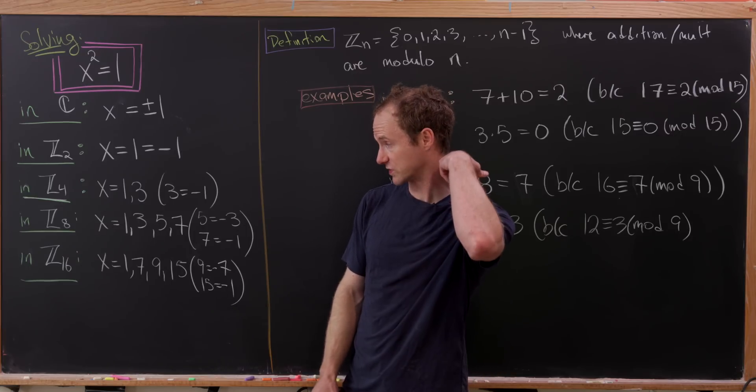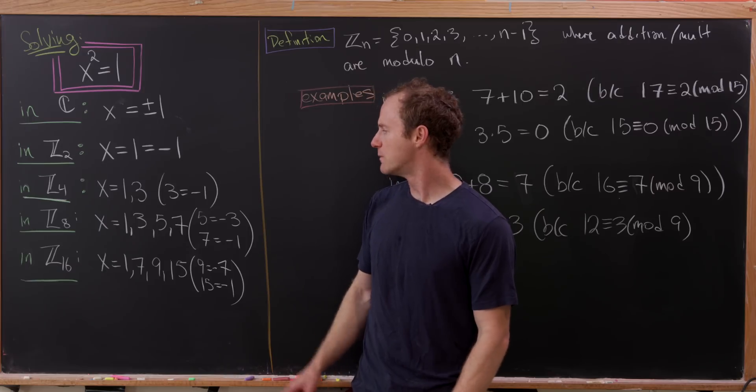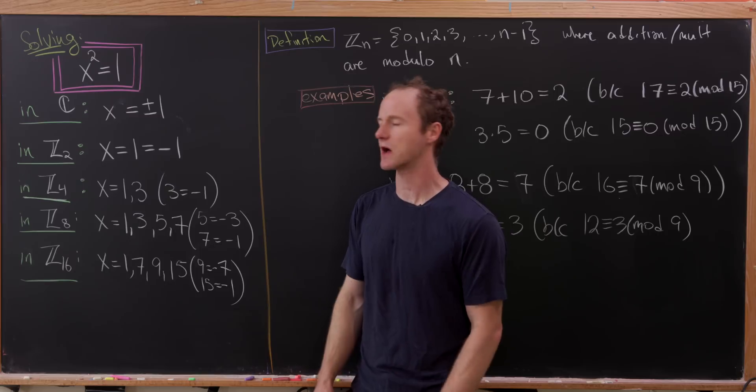Now in ℤ₈, we get 4 solutions. So we have 1, 3, 5, 7. But observe that 5 is the same thing as -3 and 7 is the same thing as -1. So these actually come in pairs.